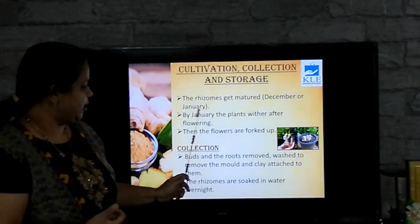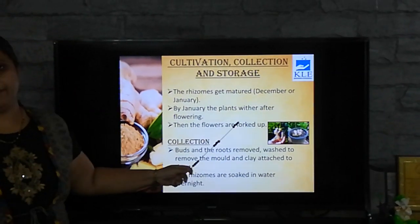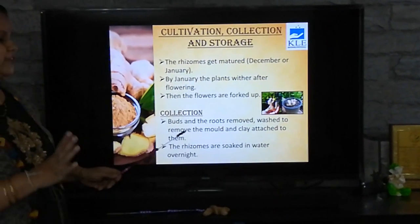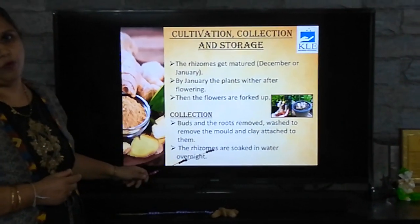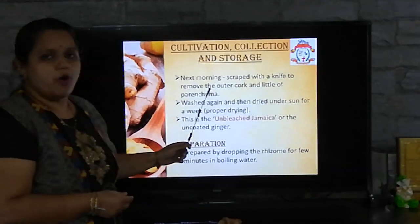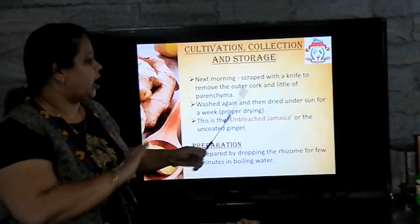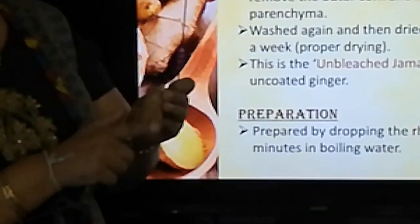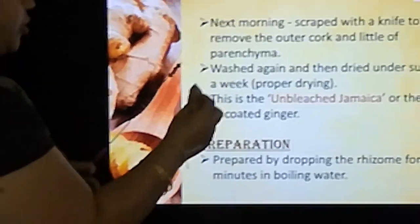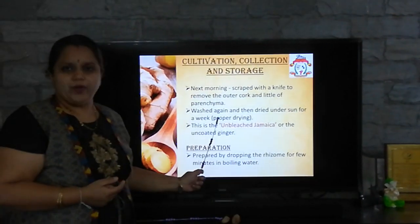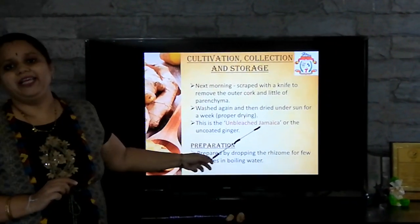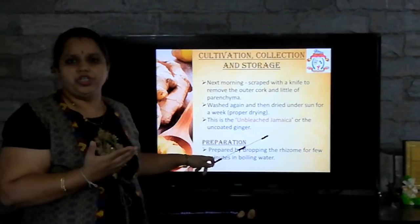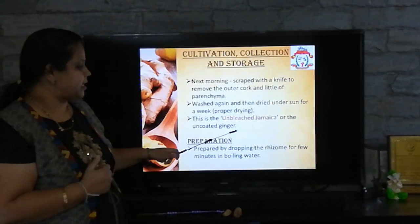For collection, buds and roots are removed. They are washed to remove all the mud and clay attached to them, and the rhizomes are soaked in water overnight. The next morning, the rhizomes are scrapped with a knife to remove the outer cork layer and a little of parenchyma. It is washed again and then dried under the sun for a week to ensure thorough drying. This is called unbleached Jamaica or uncoated ginger.